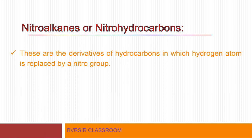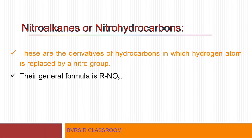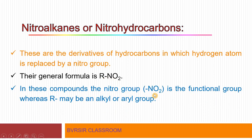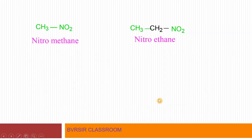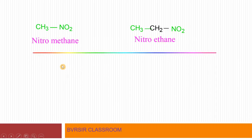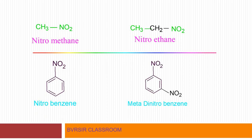These are the derivatives of hydrocarbons in which a hydrogen atom is replaced by a nitro group. The general formula is RNO2, where the nitro group is the functional group and R may be an alkyl or aryl group. Examples include CH3NO2 (nitromethane), CH3CH2NO2 (nitroethane), and aromatic compounds like nitrobenzene and meta-dinitrobenzene.